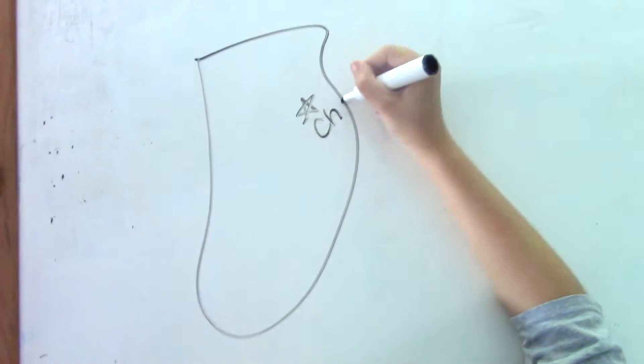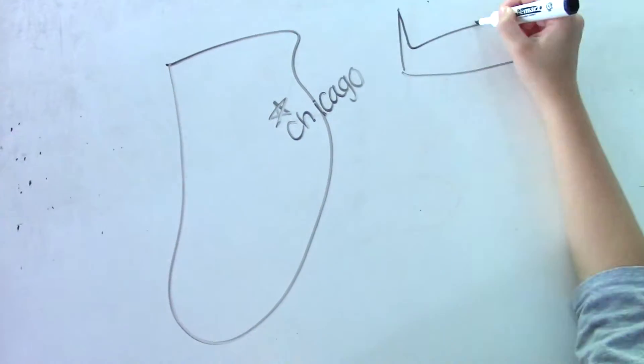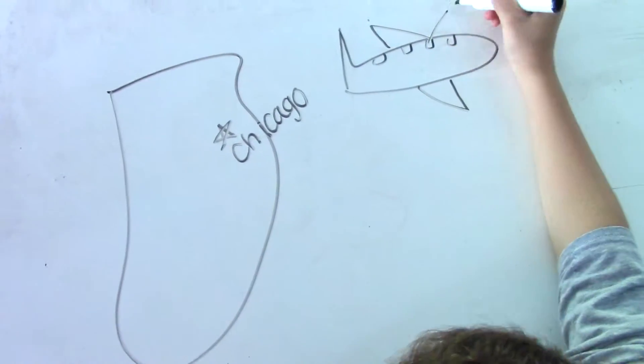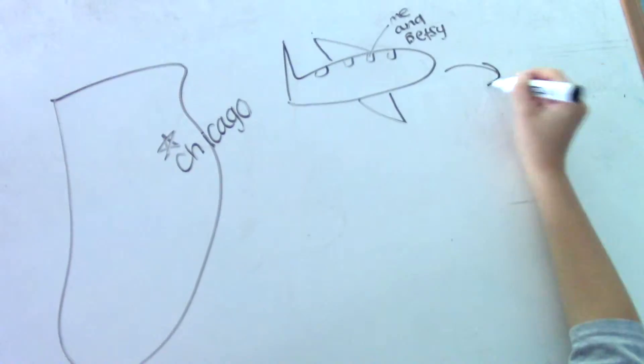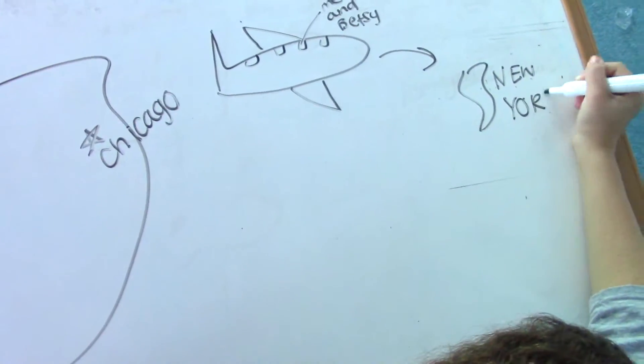So I live in Chicago and me and my friend Betsy flew to New York. It was my first time in New York to go to Frenchwood's camp. We've been here for two days but I'm going to tell you about today.